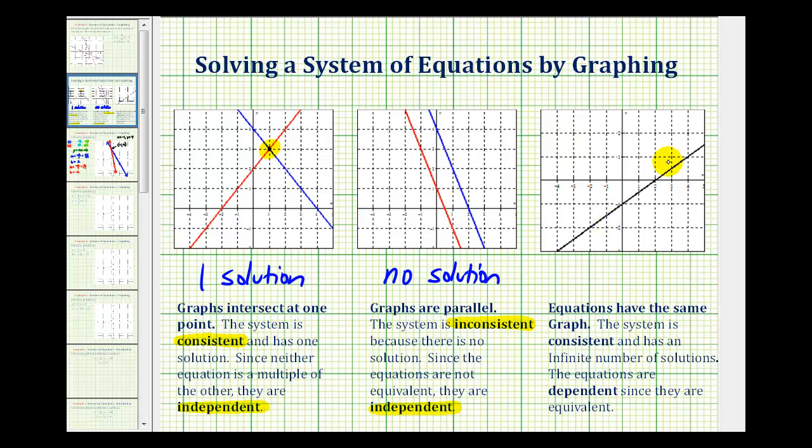And the last possibility is we graph both lines and it's the same line. In this case, we have an infinite number of solutions because the two lines share an infinite number of points. And the system is consistent, but this time the equations are dependent.